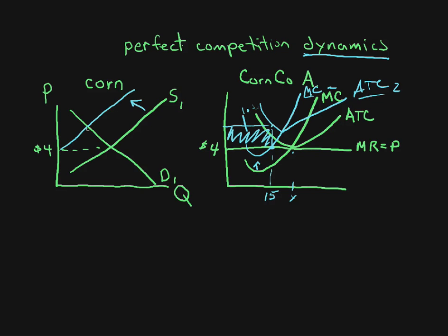The supply curve will shift up to the left. Companies are coming out of this market — you have all these companies: B, C, D, E — and with this loss a few of them get out of the market, so the supply curve shifts to the left.